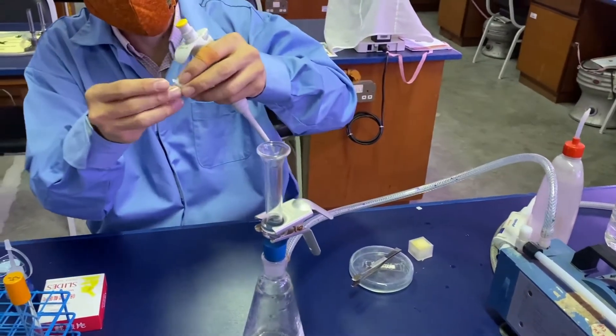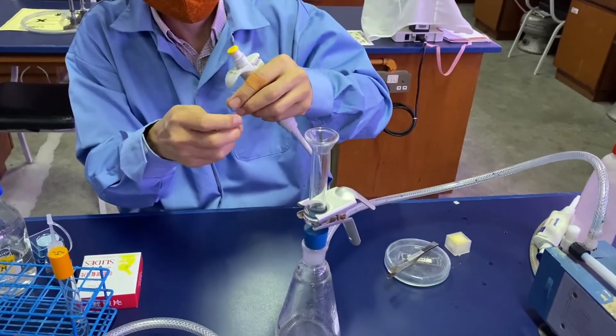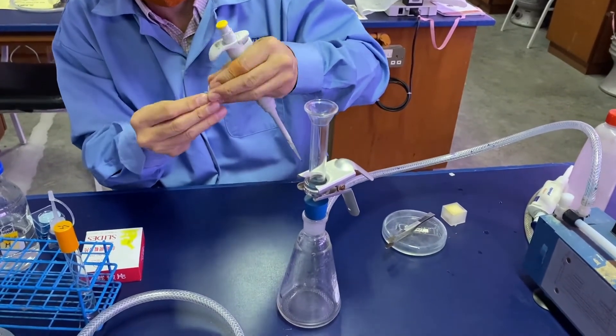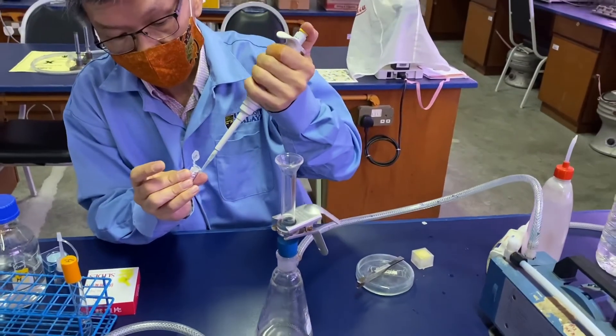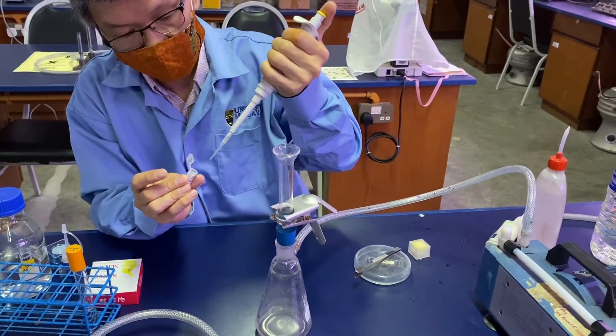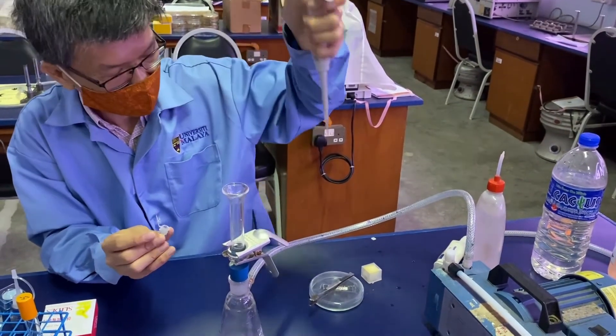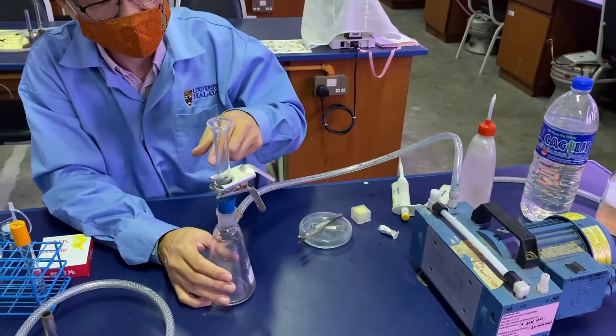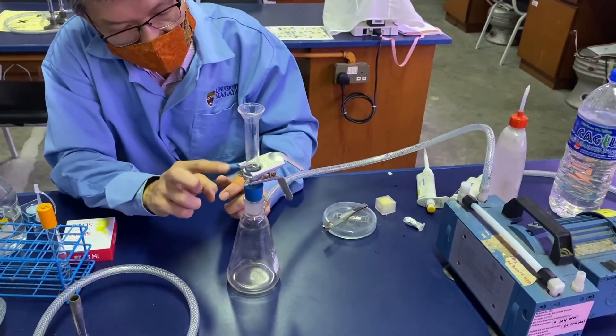This is the fluorochrome DAPI solution. It is wrapped in aluminum foil because we want to prevent too much exposure to light. Add about 100 microliters of fluorochrome onto the sample. You can gently mix it around.